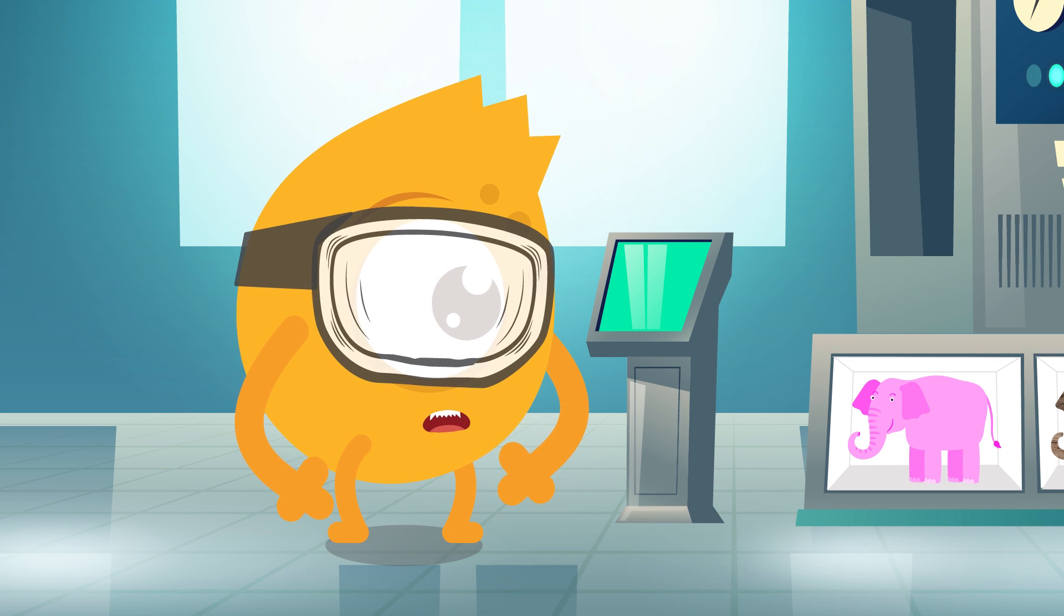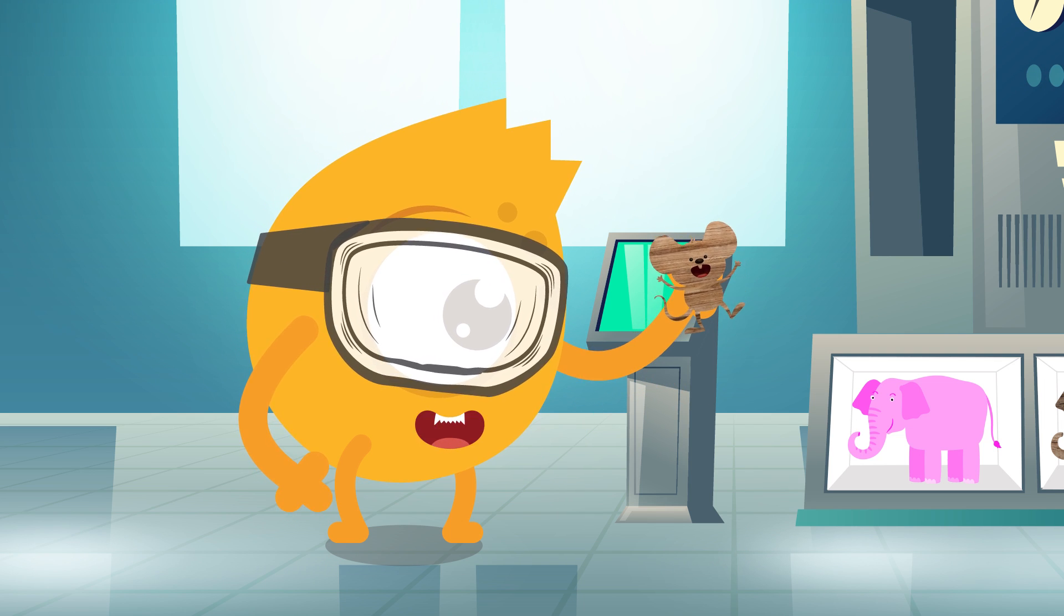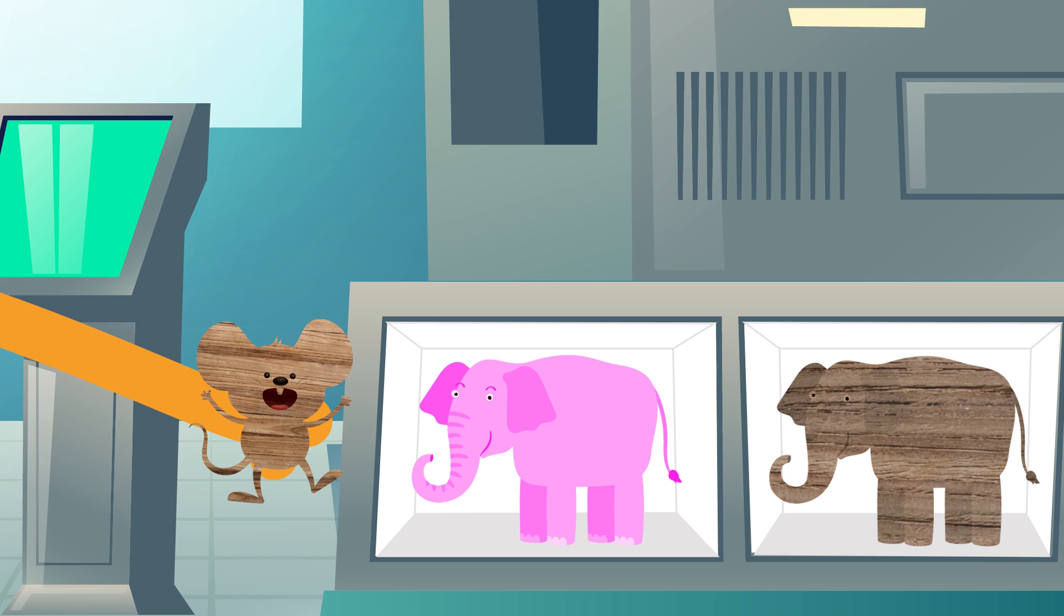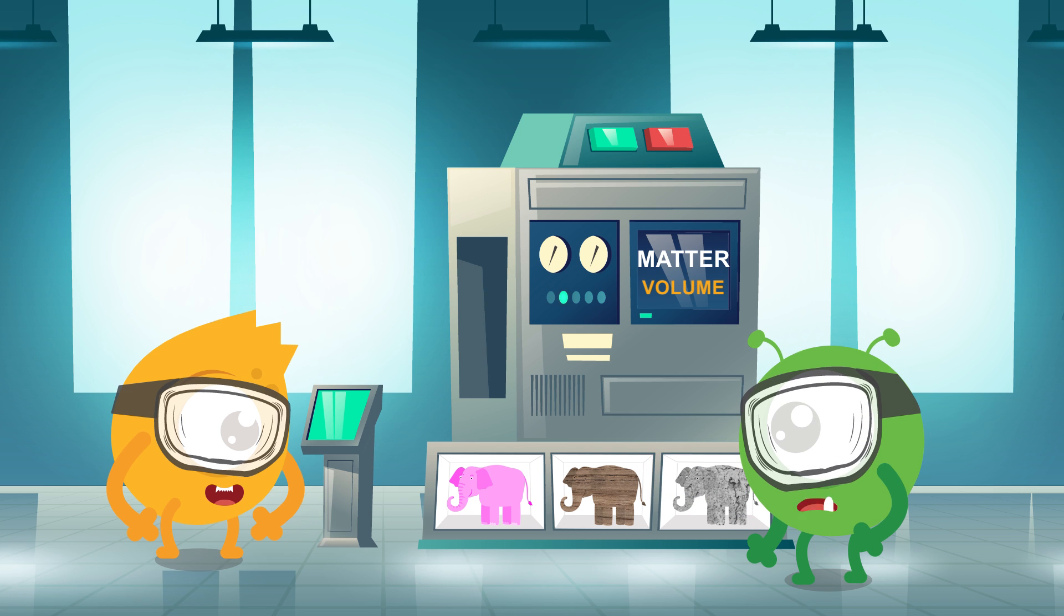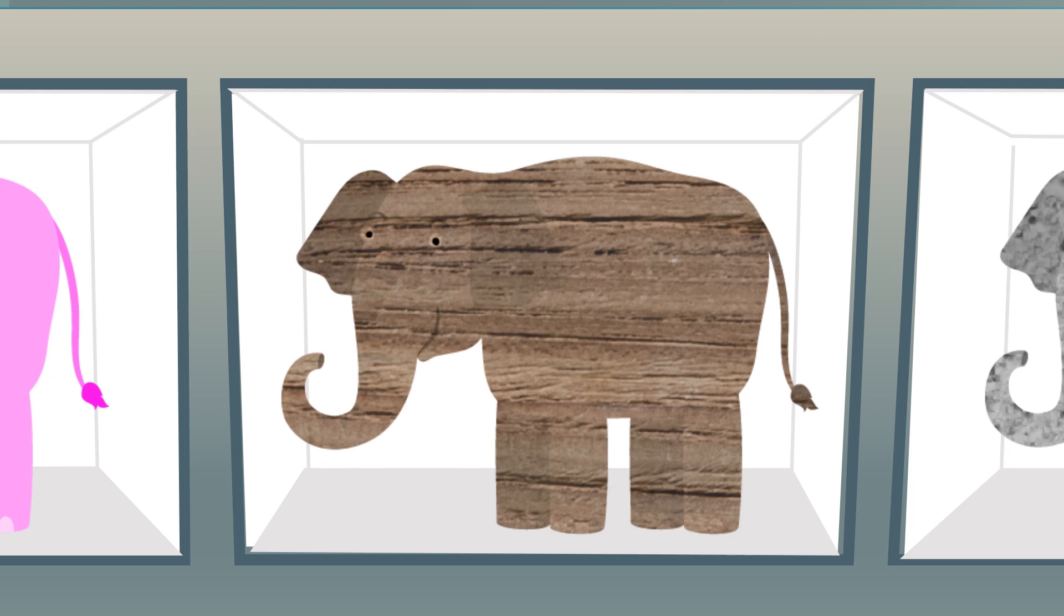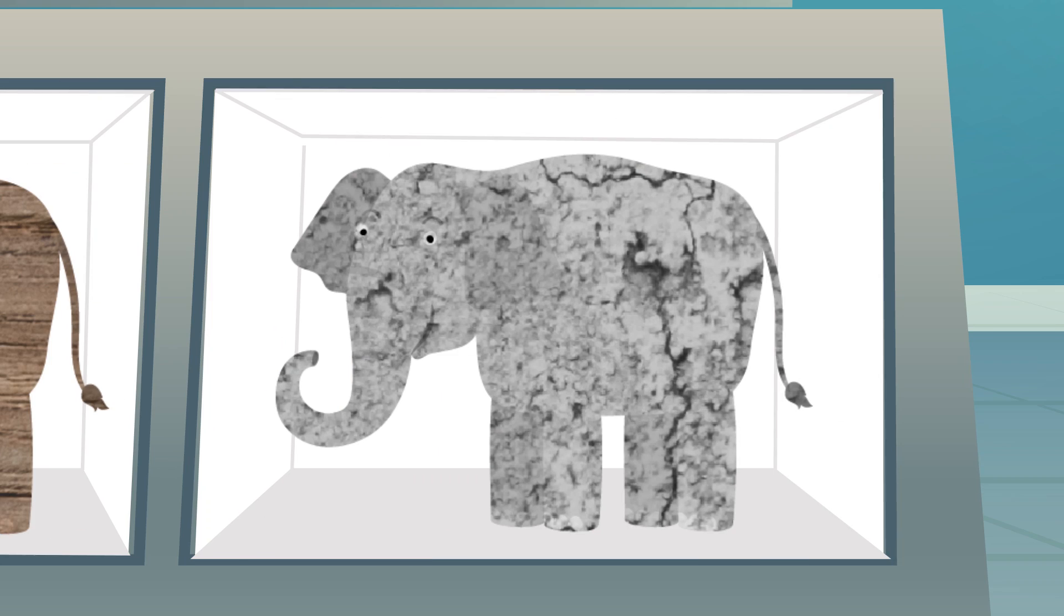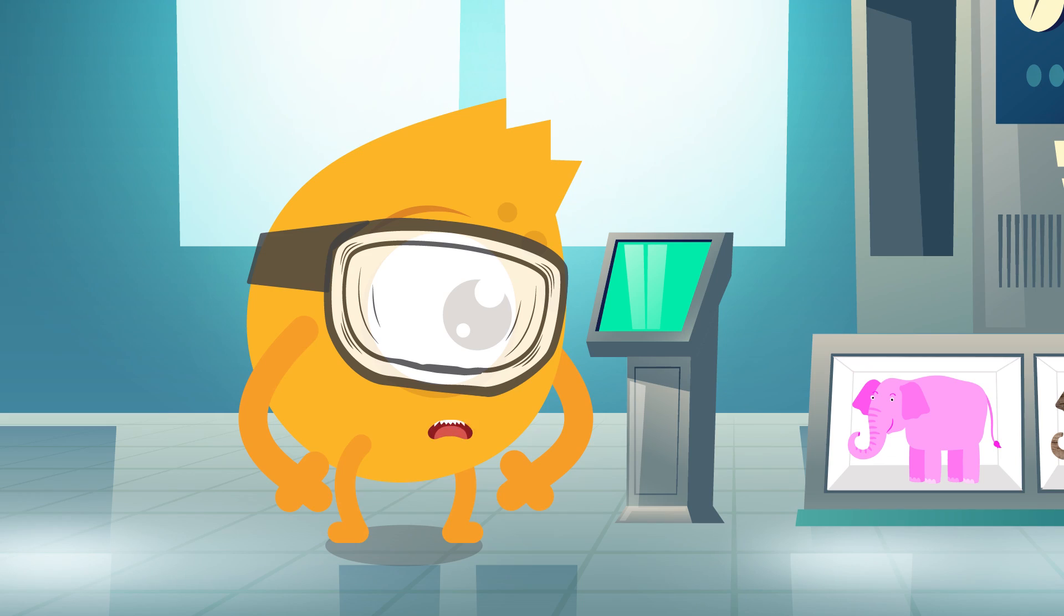Before I made the elephant models, I made a mouse for practice! It takes up a lot less space than the elephant, so it has less volume! Yeah, but these three elephants are all the same size! They take up the same amount of space, so their volume is the same! Sure is!